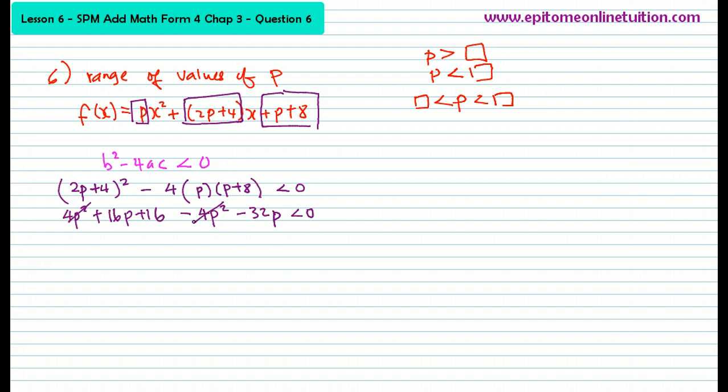Okay, so it's very easy now. 4p square, 4p square, no more. 16p, so that's negative 16p plus 16, less than 0. Okay, so now you do this as if it is an equation. Just do it as if it is an equation. Shift the 16 over because you want to isolate the p. So that's negative 16.